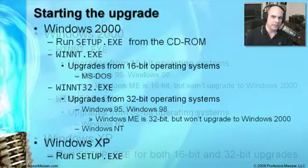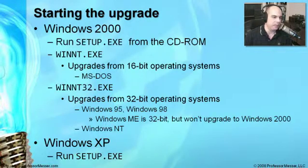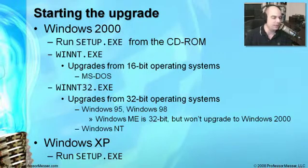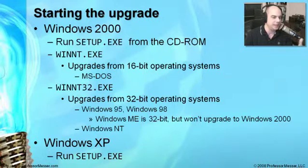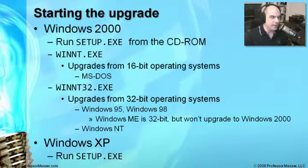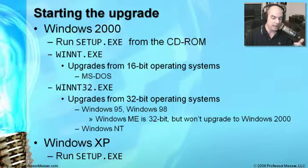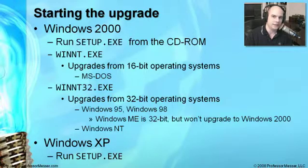Starting the upgrade for Windows XP is a relatively simple process. With Windows 2000, you had to run different executables depending on whether you were in a 16-bit or 32-bit operating system — a fairly convoluted method. With Windows XP, Microsoft streamlined a great deal of this. If you want to upgrade to Windows XP, you simply run setup.exe for both 16-bit and 32-bit operating systems. Whether you're running from Windows 98 or Windows NT and upgrading to XP, you just run the setup program and it takes care of everything from there.